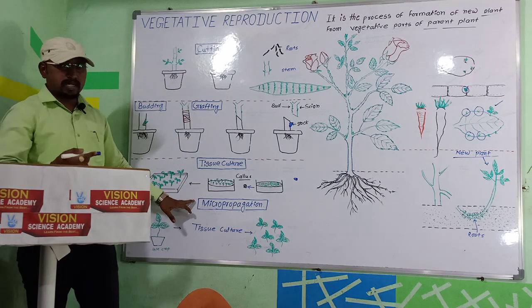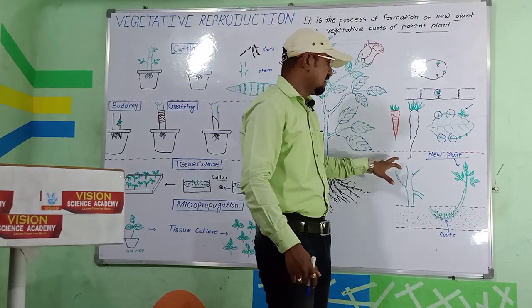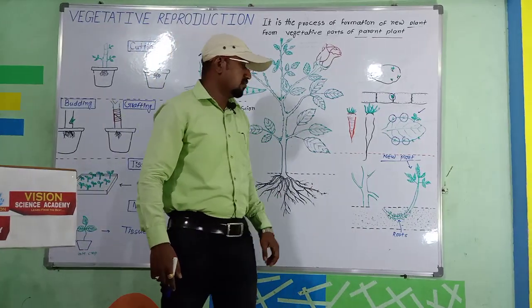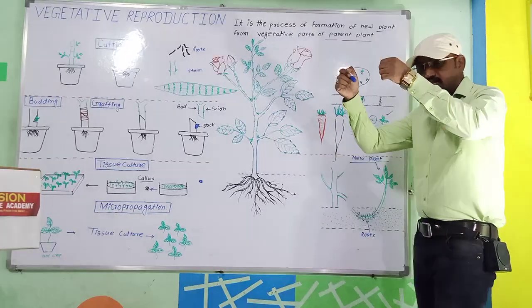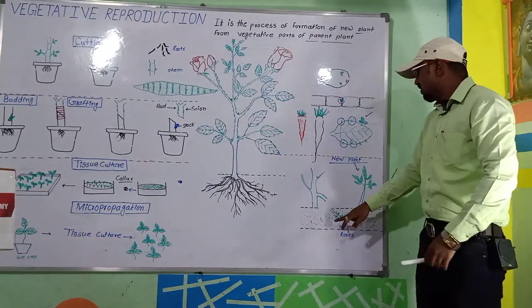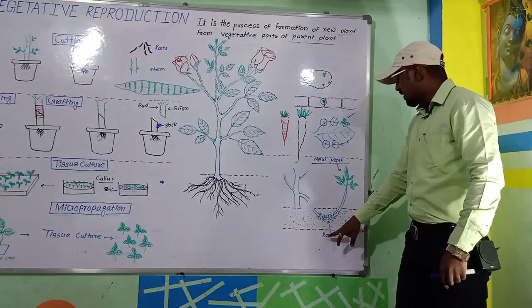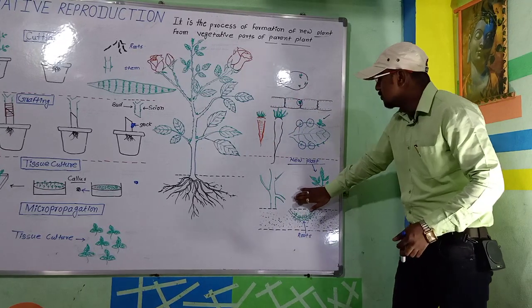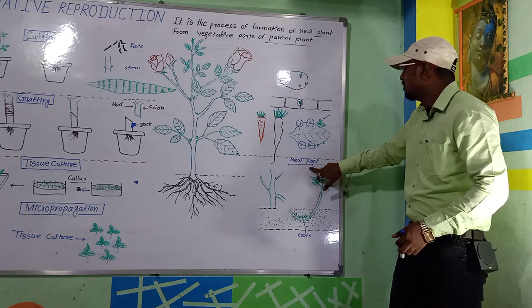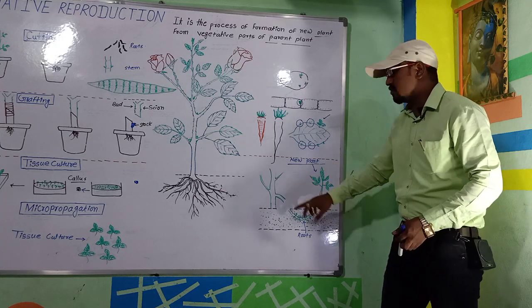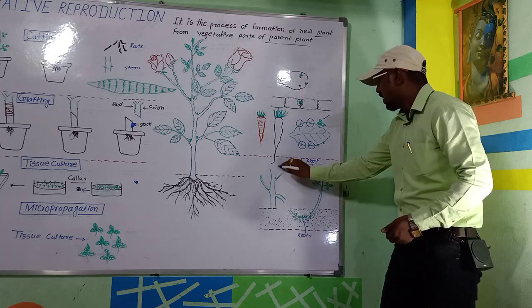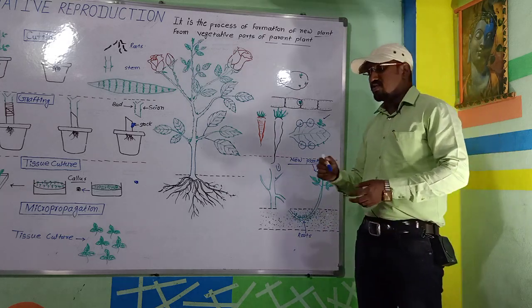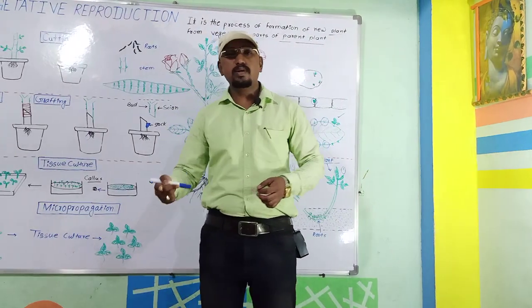The last technique is layering, used for plants like jasmine and lemon. In layering, a flexible branch of the parent plant is bent to the ground, roots develop at that point, and then the new plant can be separated from the parent. One plant makes another free-standing plant. This is called vegetative reproduction or vegetative propagation.